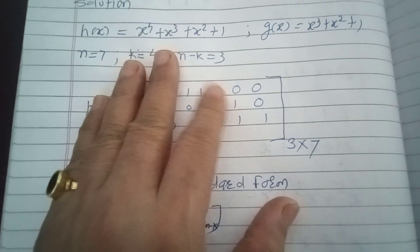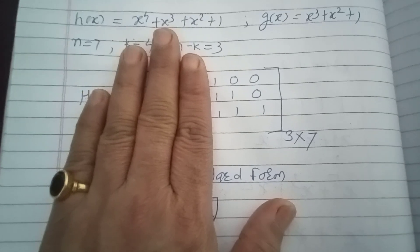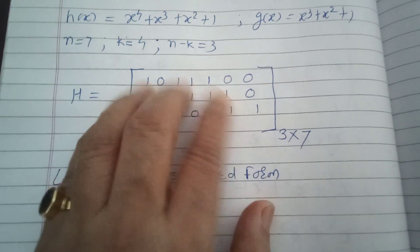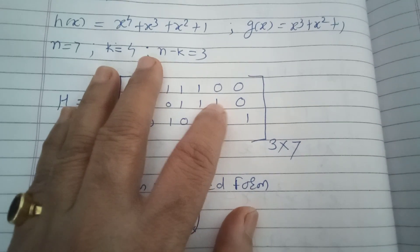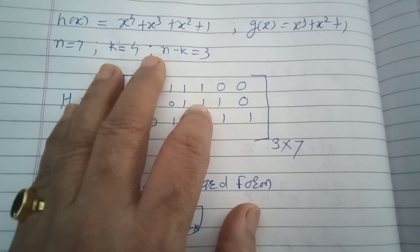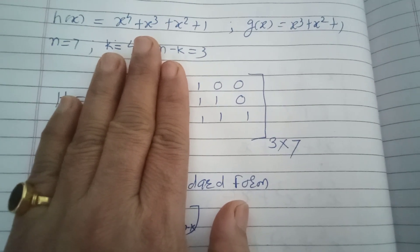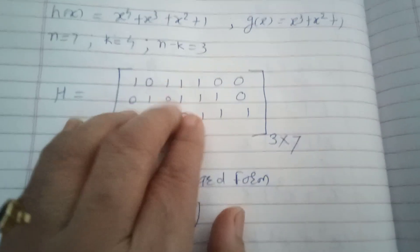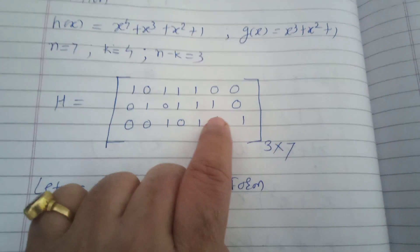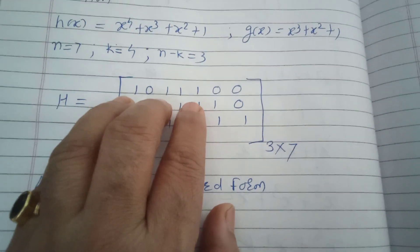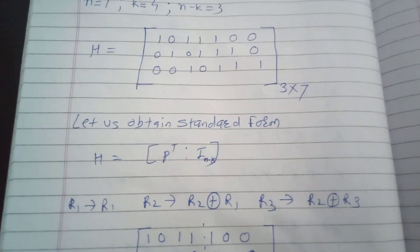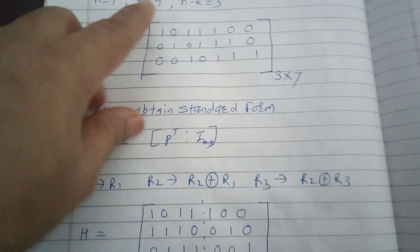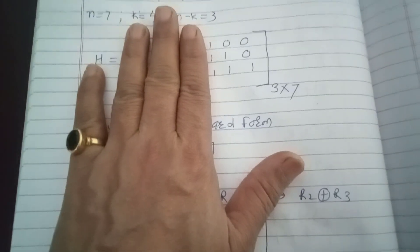Looking at the current H matrix, the first row already gives 1 0 0 in the last three columns, which is fine. The second row has an extra 1 that needs to be cancelled, so we modify R2 by computing R2 = R1 + R2. For the third row, we need 0 0 1, so we compute R3 = R2 + R3. These operations are applied mod 2, i.e., XOR.